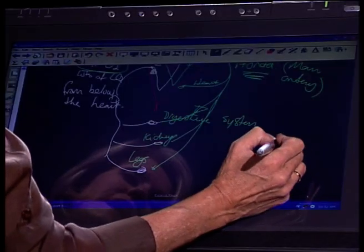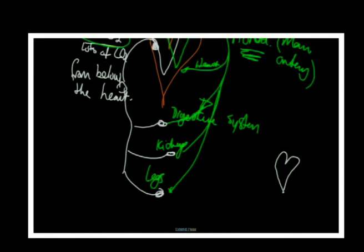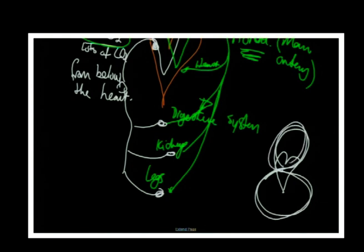The blood moving between the heart and the lungs is pulmonary circulation; the blood moving from the heart to all parts of the body is systemic circulation. The blood goes: heart → lungs → heart → all parts of the body → heart → lungs, in a continuous figure-eight pattern. That is your double circulation.